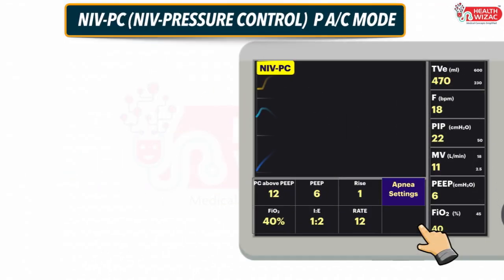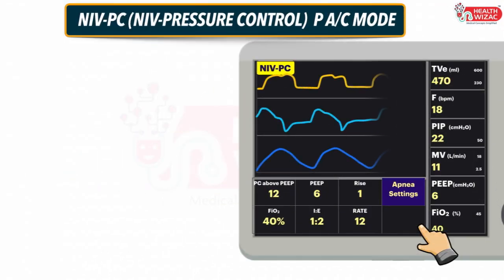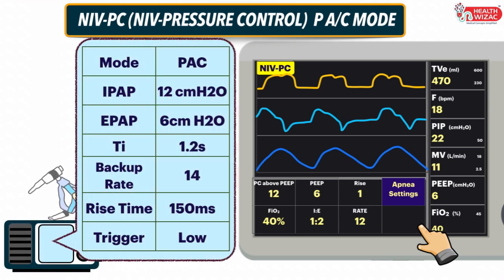Next is NIV PC mode — Pressure Control mode or Pressure Assist Control mode. If we use a ventilator to deliver NIV PC mode, we have to set: PC above PEEP value, PEEP value, Rise Time, FiO2 level, I:E ratio, Rate, and Apnea settings for backup ventilation. If we use a BiPAP or smaller machine for NIV PC mode, we may see the PAC label on it. In this, we set: IPAP value, EPAP value, Inspiratory Time, Backup Rate, Rise Time, and Trigger Sensitivity — set to low, medium, or high depending upon the patient's clinical condition.